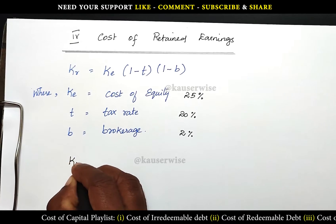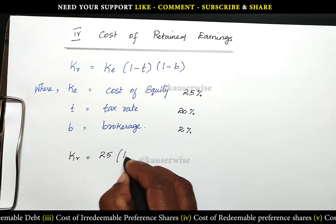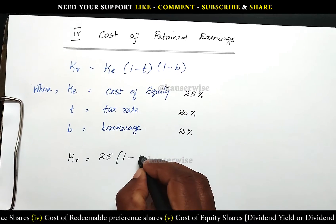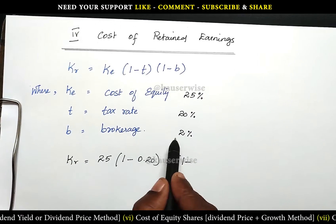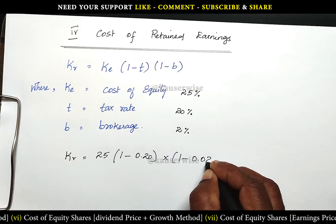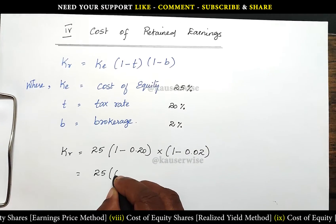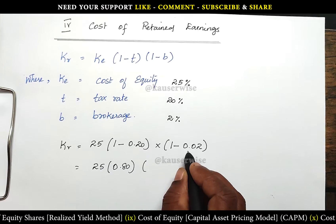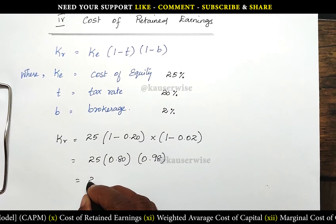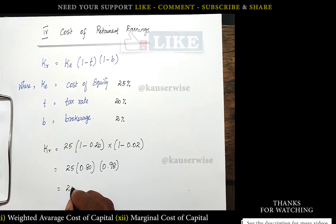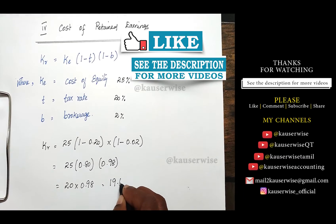Now substitute these figures in the formula to find out the cost of retained earnings. KR is equal to KE, 25%, into (1 minus T). The tax bracket is 20%, so 0.20, into (1 minus B), where brokerage is 2%, so 0.02. That gives us: 25 into (1 minus 0.20), which is 0.80, into (1 minus 0.02), which is 0.98. So 25 into 0.80 gives 20, into 0.98 gives the answer: 19.6%.